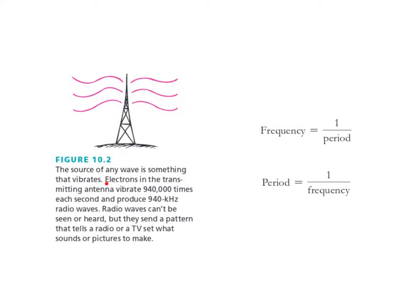In this particular example, electrons in the transmitting antenna vibrate 940,000 times each second — that would be 940 kilohertz, because kilo is 1,000, so 940,000 hertz is 940 kilohertz. Radio waves cannot be seen or heard by our eyes and ears, but they can contain information that sends a pattern to tell a radio or TV set what sounds and pictures to make.